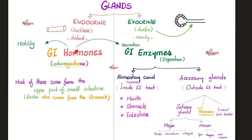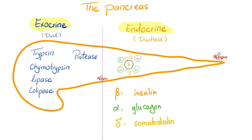Today we'll focus just on the endocrine pancreas. Without a duct, we have beta cells — they are central, anatomically and metaphorically. Anatomically, they are in the center of the islets of Langerhans. Physiologically, they give us the most important hormone: insulin. Alpha cells are around the beta, not as central, not as important — that's glucagon. And somatostatin, the doofus, is interspersed between them.